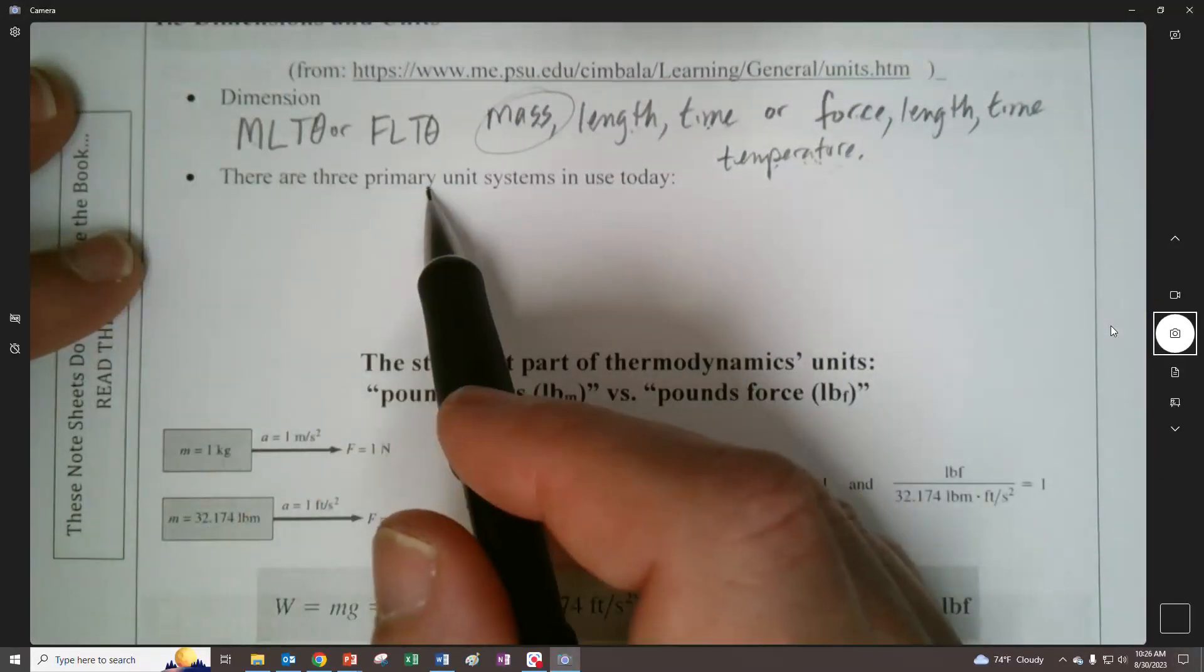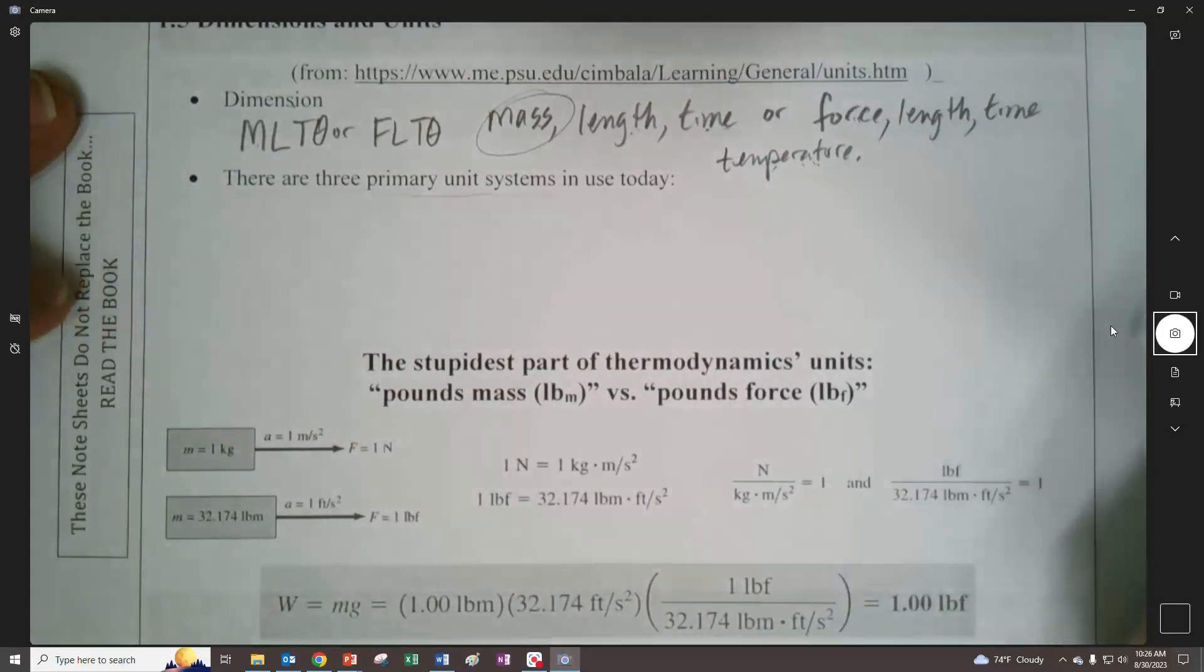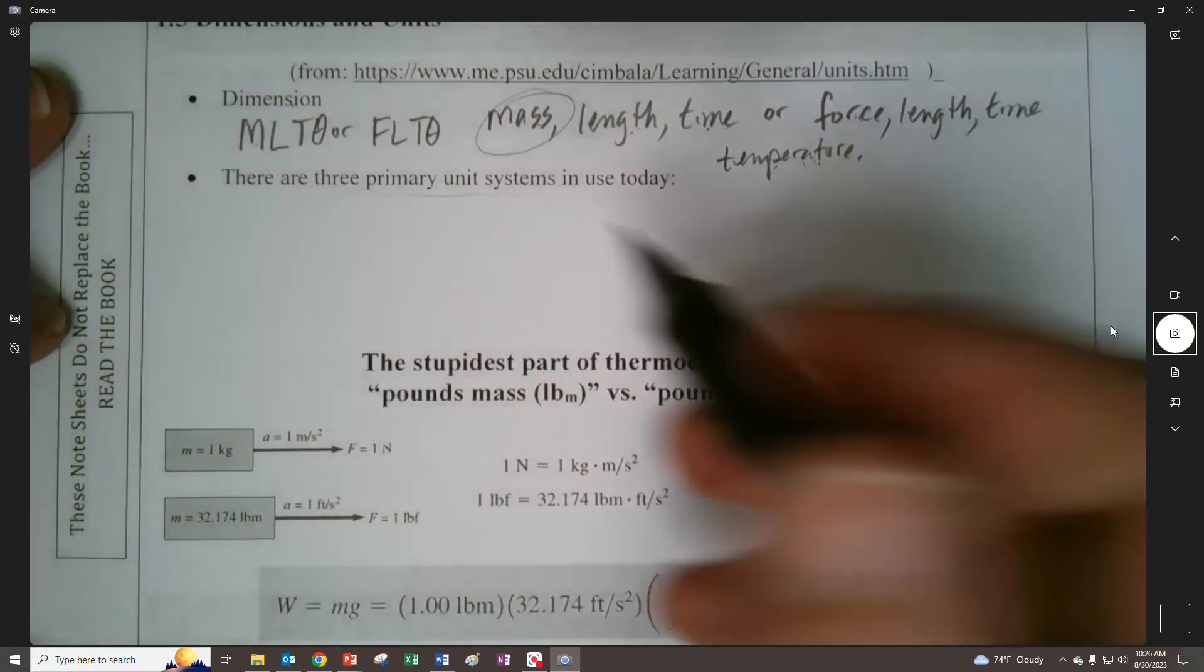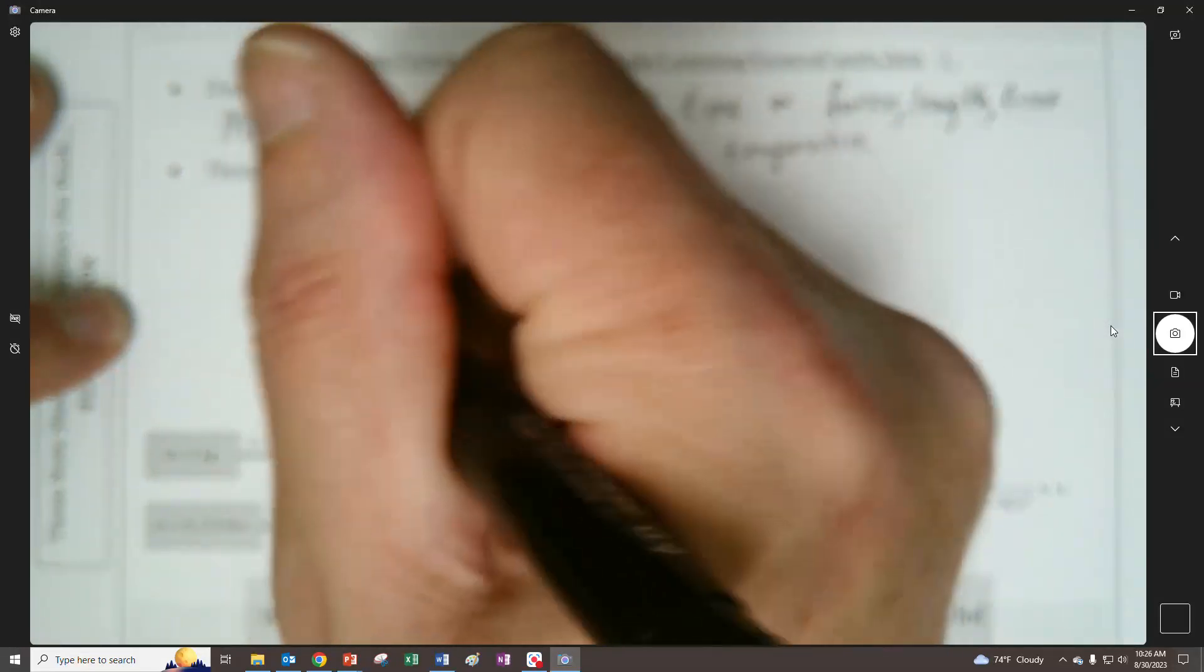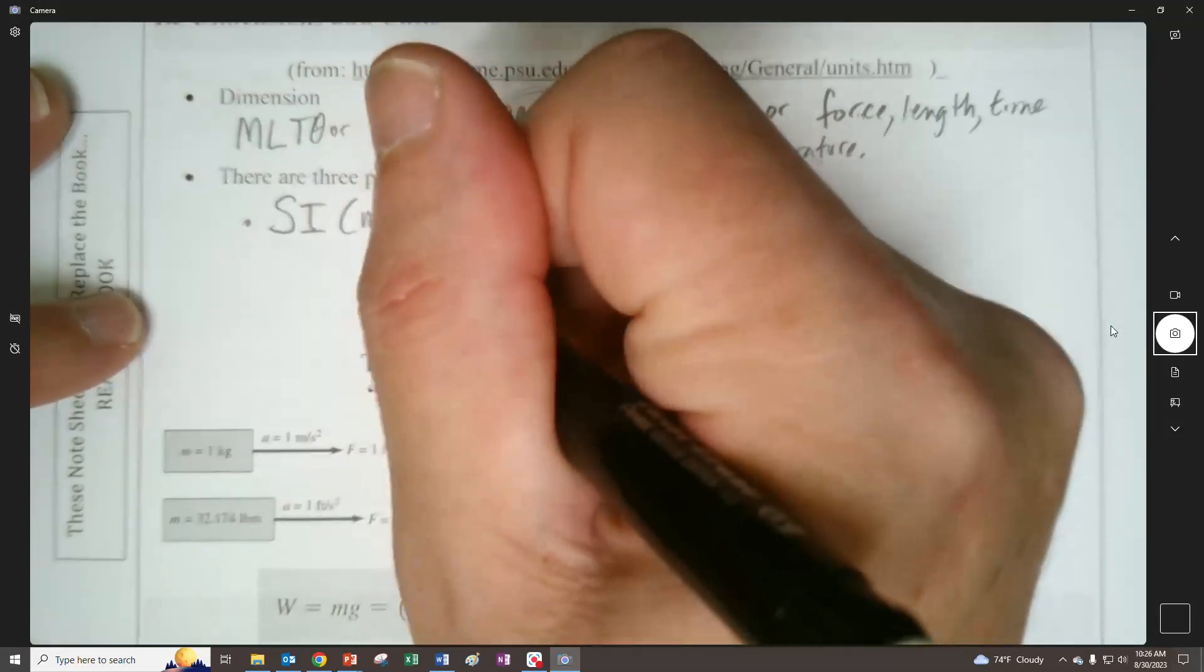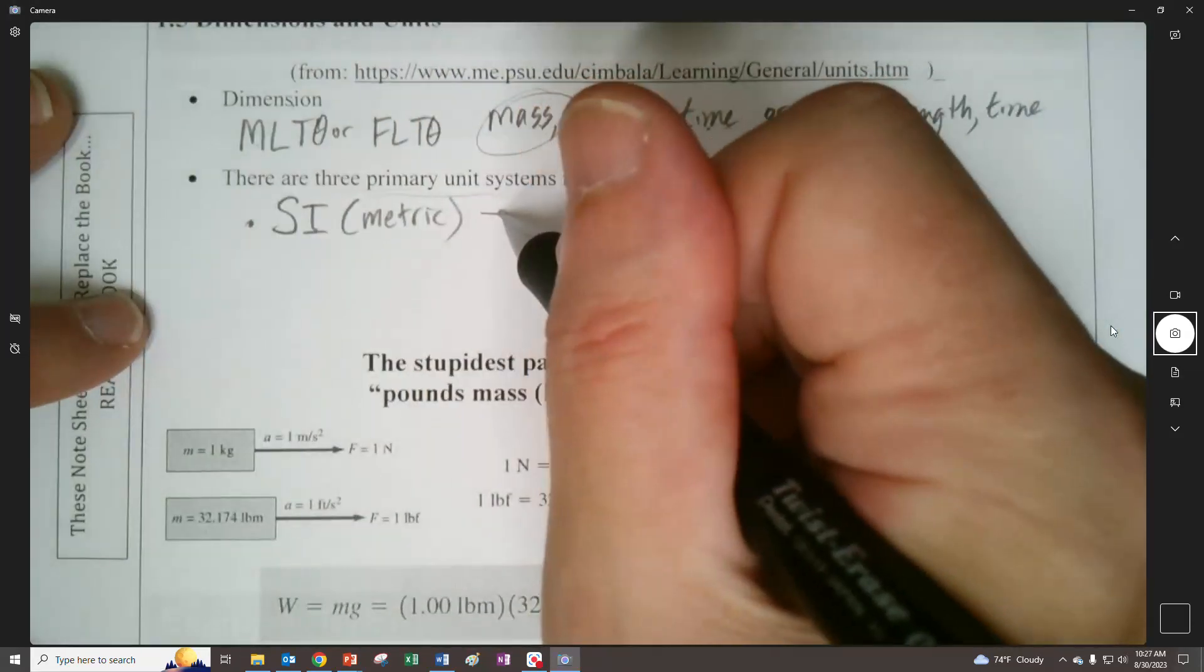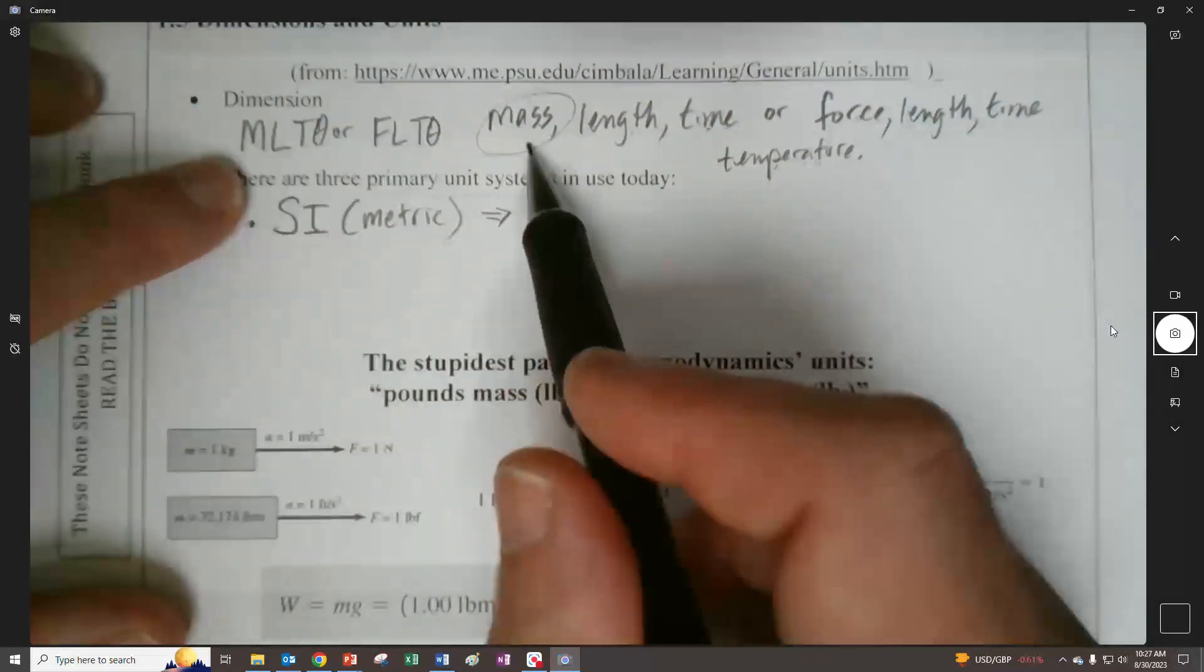So there's three main primary unit systems in use today. Some of them are peculiar to engineering education in terms of it being in practice. But the main one that we should be converting to is SI, which we think of as the metric system.